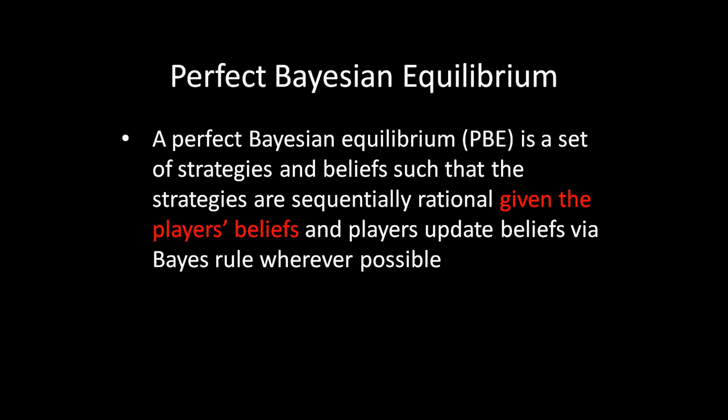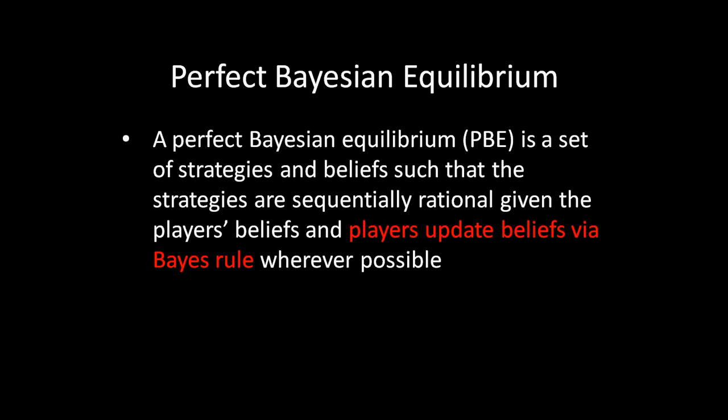The credibility of strategies depends on beliefs, which takes us to the beliefs part: how do you arrive at these beliefs? Just like with Bayesian Nash Equilibrium, you start off with a prior belief, but here you update your information as the game progresses. For example, in a game with a strong type and a weak type, if the strong type bullies and the weak type cowers in equilibrium, observing either action gives you new information. Fortunately, we know exactly how to update prior beliefs in light of new information: it's Bayes' rule, which was literally created to address that exact problem.